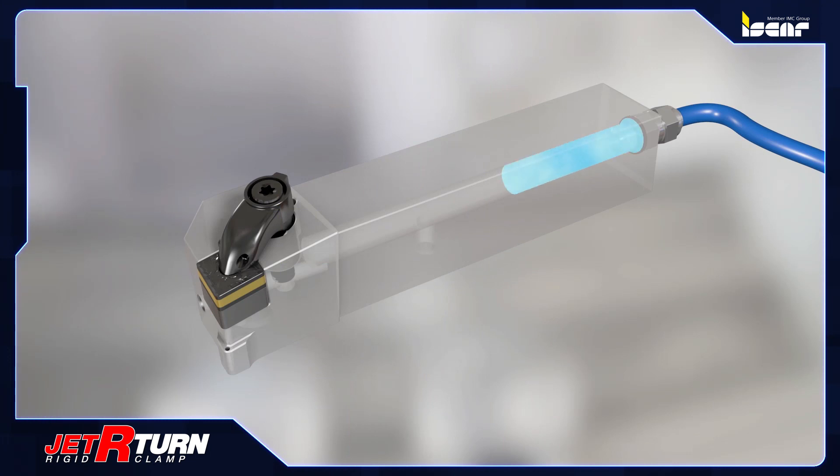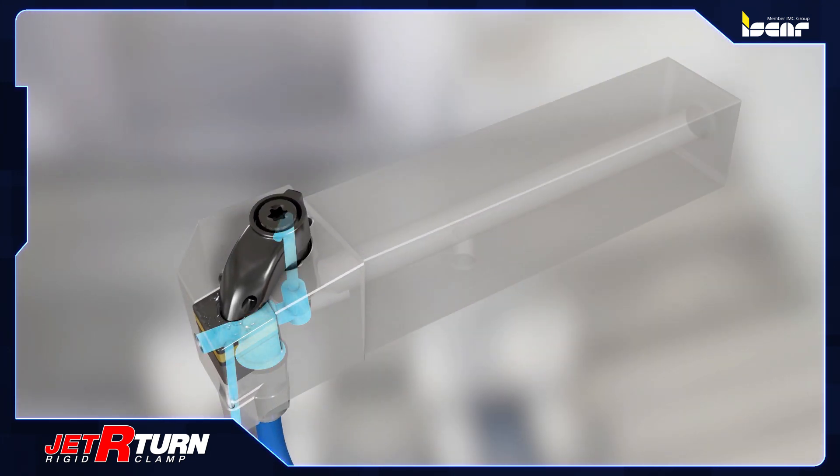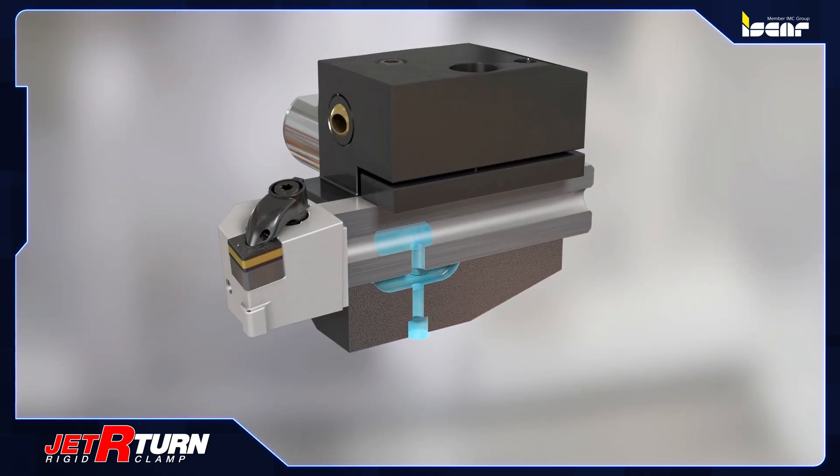The new external tools feature three coolant connection options: rear threaded inlet, bottom threaded inlet, and a bottom inlet for adjustable shank overhang for ISCAR's JHP-MC tools.